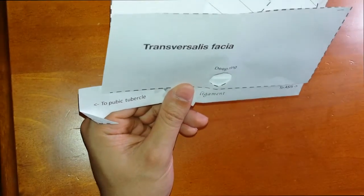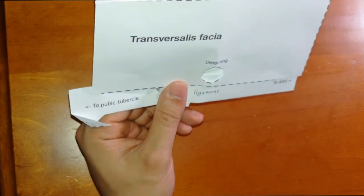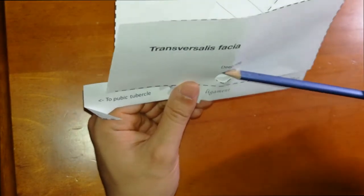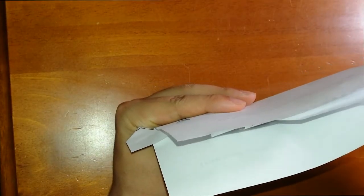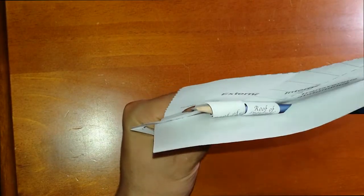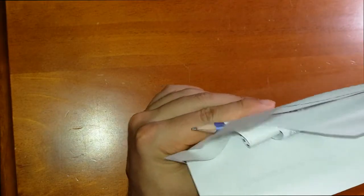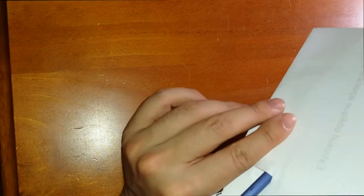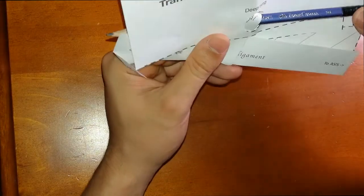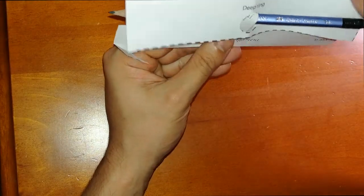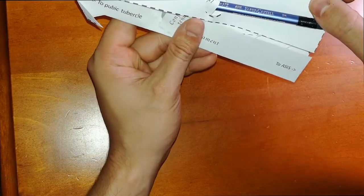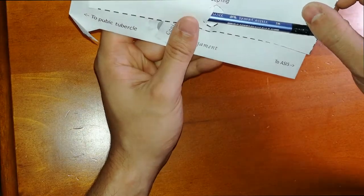You can pass a pen or pencil through the deep ring, and as you can see through the inguinal canal, like that, and then out the superficial ring. That's how the structures get through all the layers to the inguinal canal.